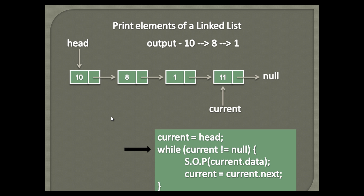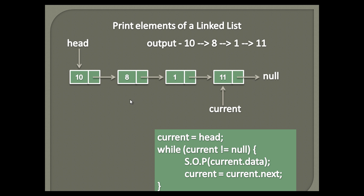Once again it checks the while loop condition. Current node points to the fourth node, which is not null. Therefore it again executes statements in the while loop as demonstrated. Output now becomes 10, 8, 1, and 11. And current node now points to current's next, which is null.